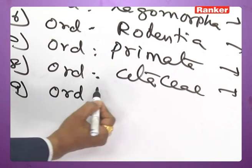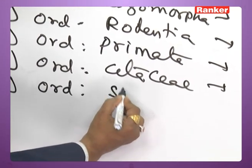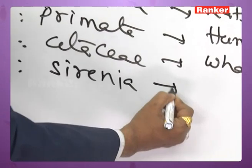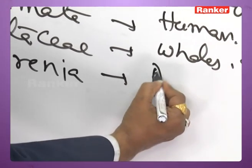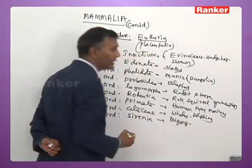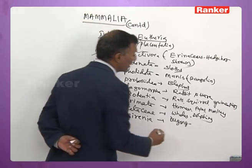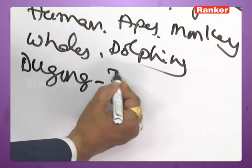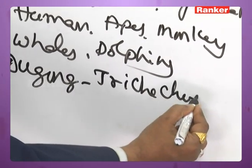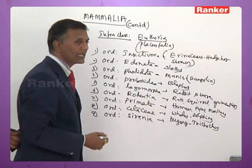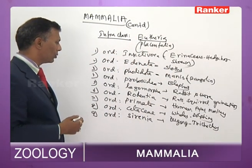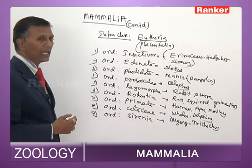Order Sirenia — includes Dugong (commonly called sea cows) and Trichechus (commonly called manatees) — aquatic herbivores belonging to Sirenia.